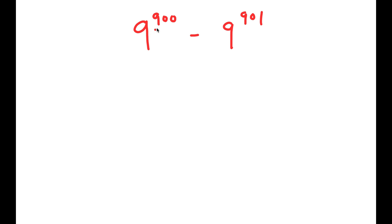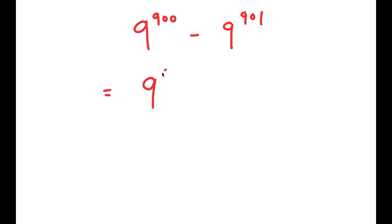Well, 9 to the power of 900 is actually a factor of 9 to the power of 901. So all we have to do is rewrite 9 to the power of 901 as something times 9 to the power of 900. We can use properties of exponents to do this, so I'm going to rewrite 9 to the power of 901 as 9 to the power of 900 plus 1.